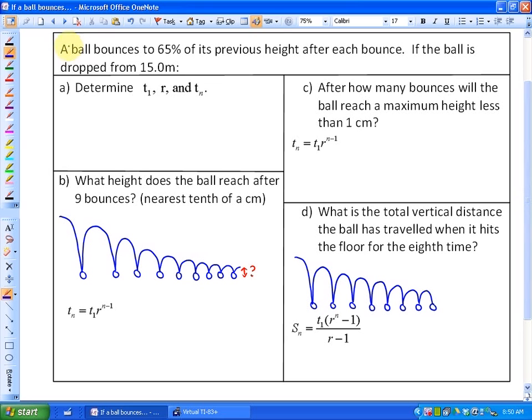This problem says a ball bounces to 65% of its previous height after each bounce. If the ball is dropped from 15 meters, determine the first term, the common ratio, and tₙ, so the general formula.